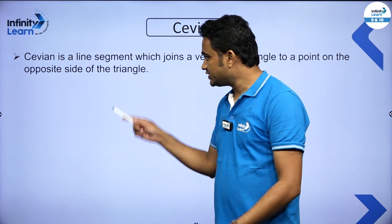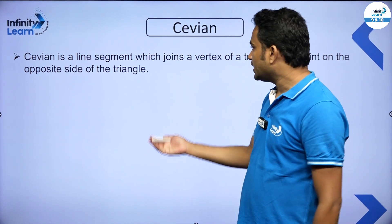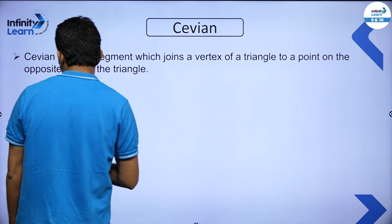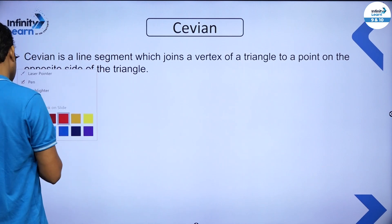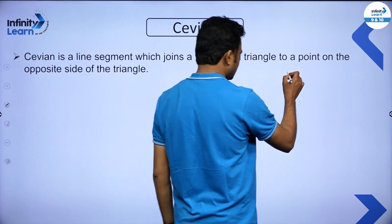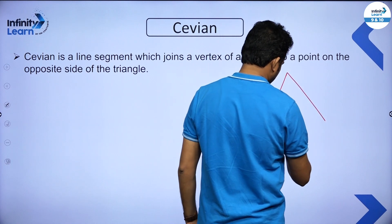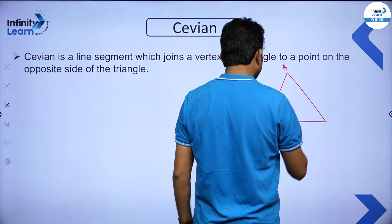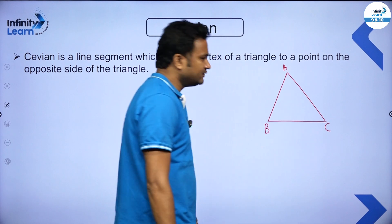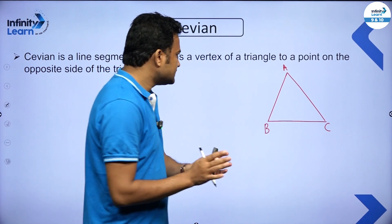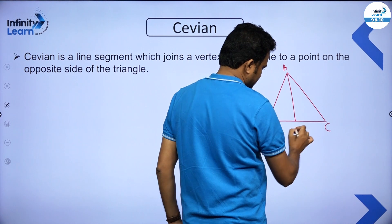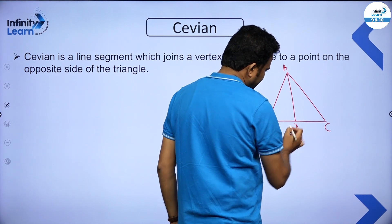What is a cevian? A cevian is a line segment which joins a vertex of a triangle to a point on the opposite side of the triangle. Let me draw a triangle ABC. There are three vertices in a triangle. If we draw a line segment from A to the opposite side, AD, then AD is a cevian.